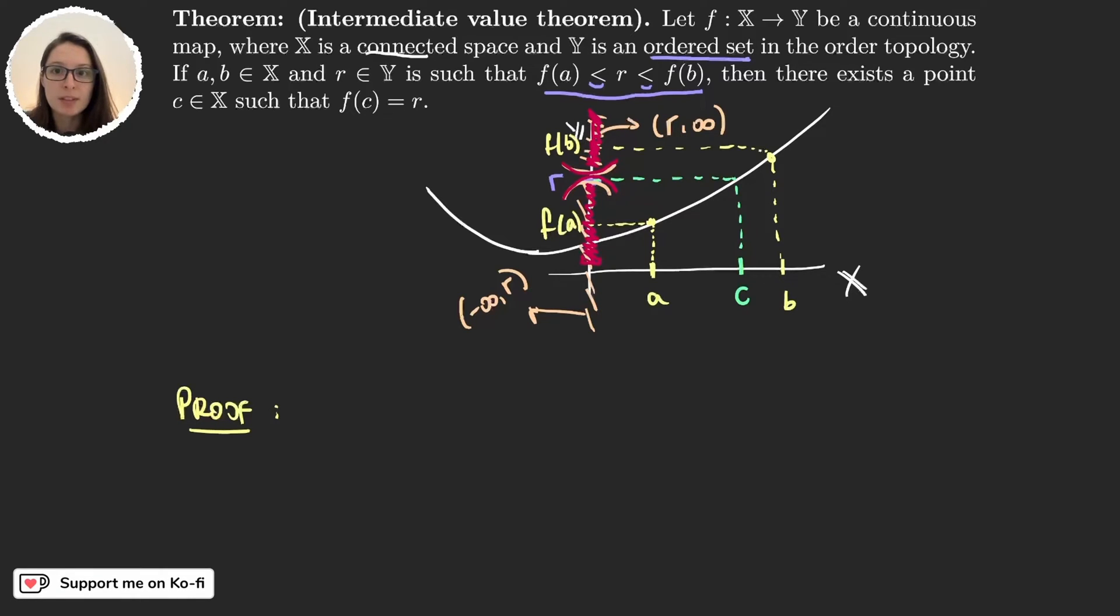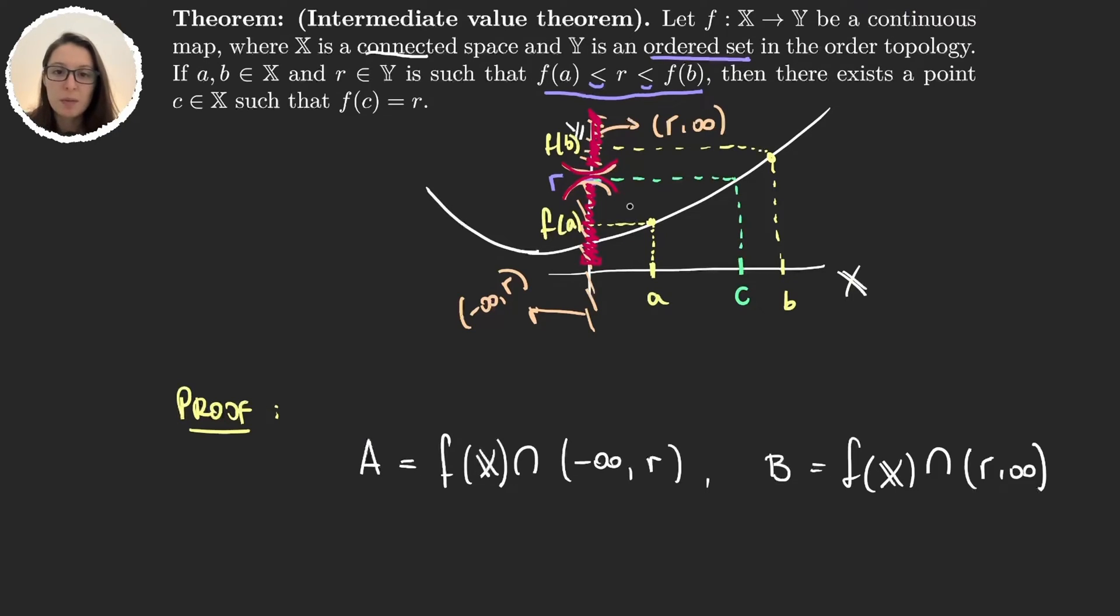So let's suppose we have something like this. And what we have here is that let's call these sets A and B. Then we have that f of a is part of A and f of b is part of B, so A and B are non-empty, but they are also disjoint.